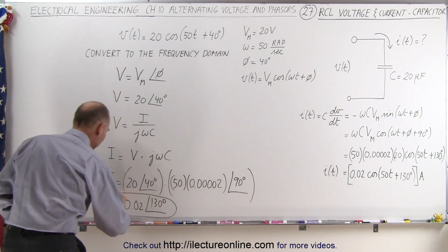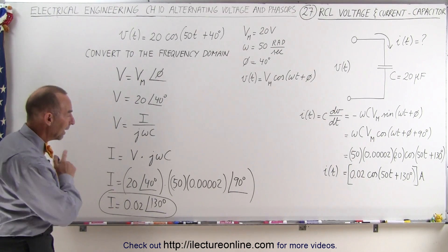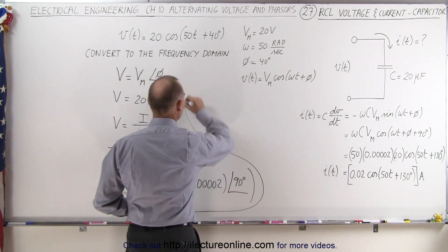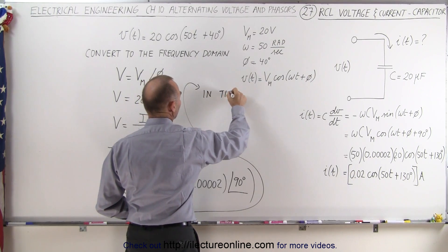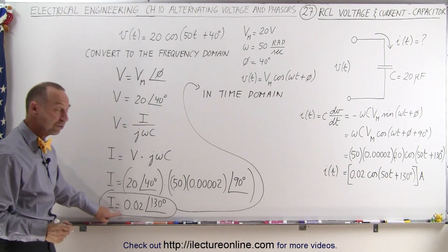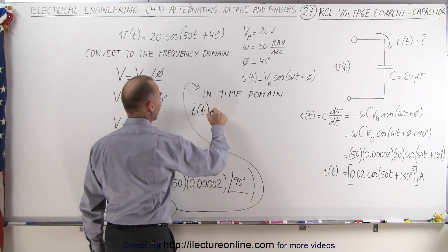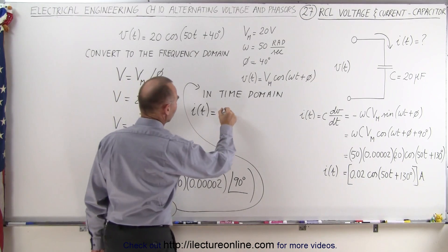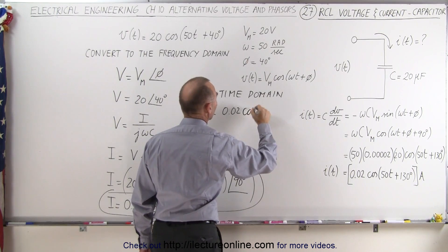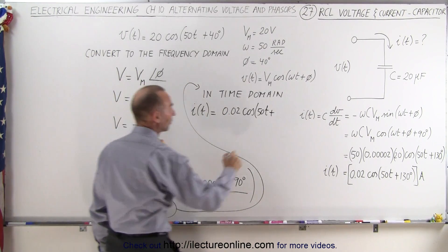And then finally, here we have the current in what we call the phasor domain or the frequency domain, and now we want to convert that back into the time domain. In the time domain, the current in the phasor domain can be converted: this is the amplitude. So i as a function of time is equal to the amplitude, which is 0.02, times the cosine of omega·t — which is 50t — plus the phase angle, and the phase angle is 130 degrees.